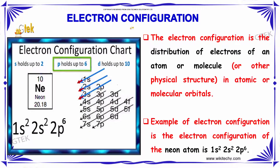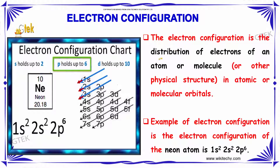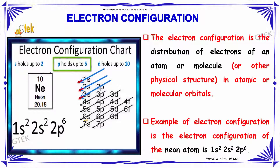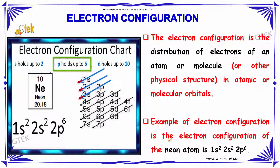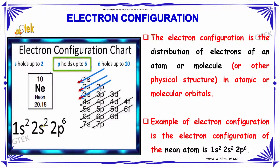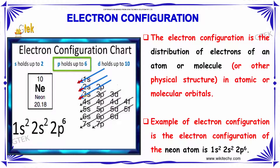If we talk about the electronic configuration — the electronic configuration is the distribution of electrons of an atom or molecule in atomic and molecular orbitals. For example, the electronic configuration of the neon atom is 1s², 2s² and 2p⁶.